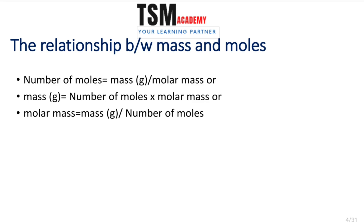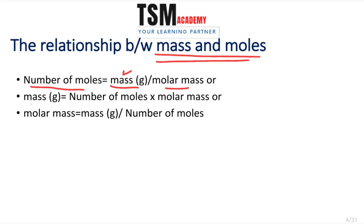Next we will learn the first rule: the relationship between mass and moles. Number of moles = mass in grams ÷ molar mass. If you are asked to calculate the number of moles, you divide the mass by the molar mass. Molar mass means the mass of one mole of that atom or compound. We can rearrange this formula: mass = molar mass × number of moles.